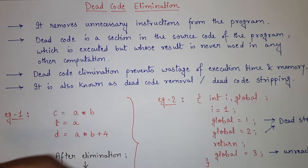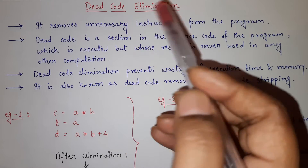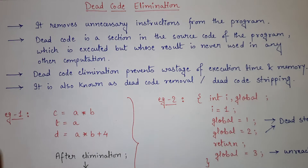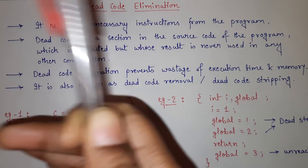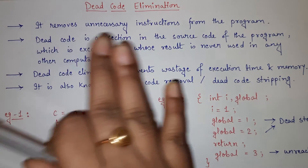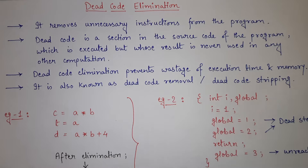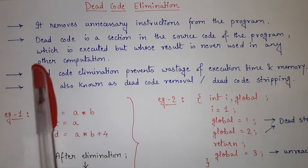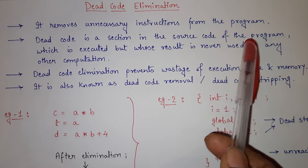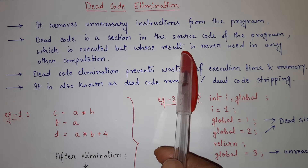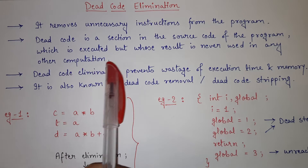What is dead code elimination? Basically, dead code elimination removes unnecessary instructions from the program. Dead code elimination means we are going to eliminate unnecessary instructions from the program. Whatever instructions are unnecessary or unused in the program, we will directly remove them. Dead code is a section in the source code of the program which is executed but whose result is never used in other computation.